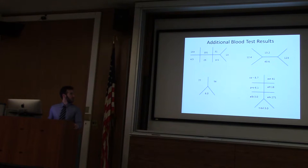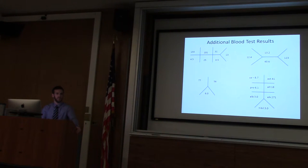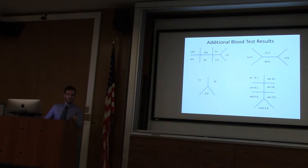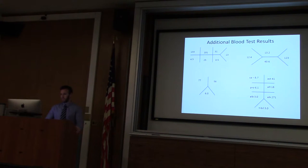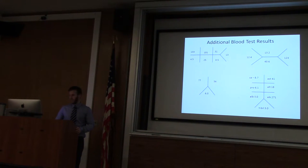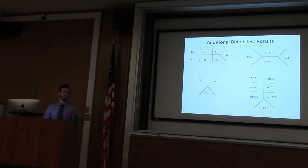Additional blood panels: white count is a little increased. Electrolytes. Glucose is 13 — drawn at a similar time to the finger stick that showed less than 20, which was already rectified. INR of 6. T-bili is 3. BUN-to-creatinine ratio is a little off.